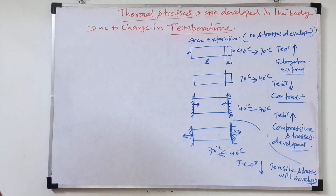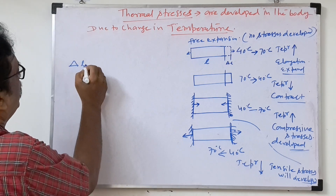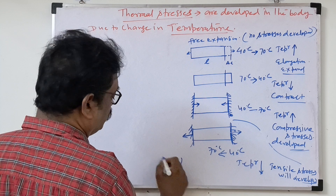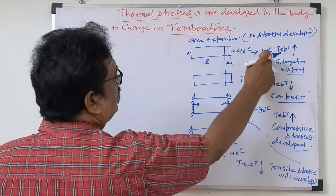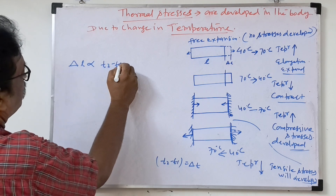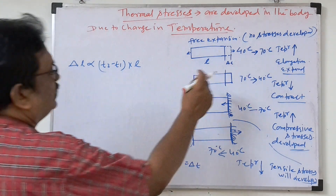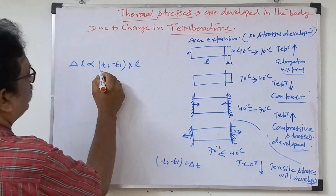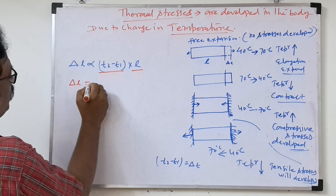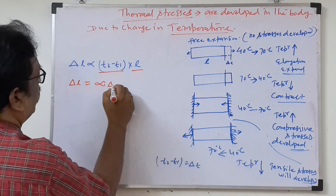This is the idea — this way you have to understand what is happening. Now, how to write the formula: change in length depends upon the temperature difference (delta T = T2 minus T1) and the length L. So delta L is proportional to temperature difference and length. If you remove the proportional sign, introduce a constant alpha — so delta L equals alpha times delta T times L.